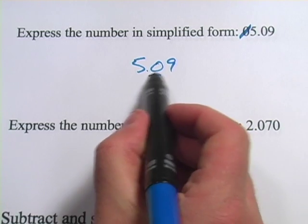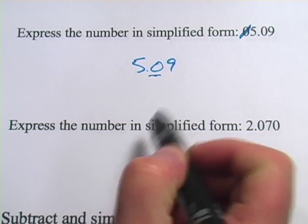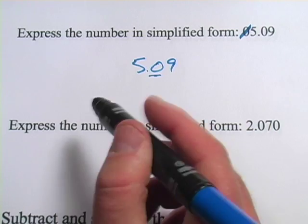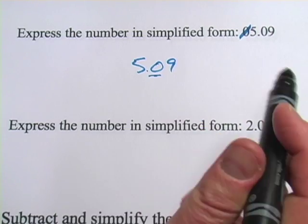We don't get rid of this zero because it's in the middle. But if it's on either end and there's nothing else before or after it, you can get rid of the zeros.